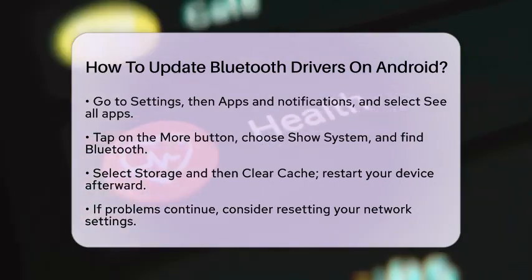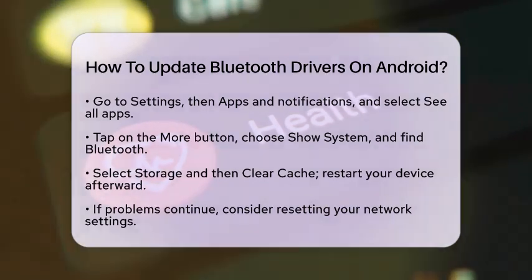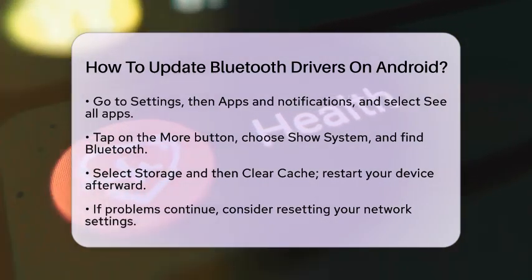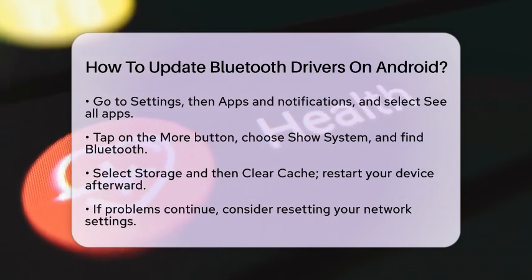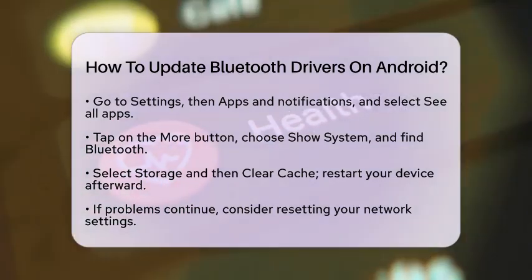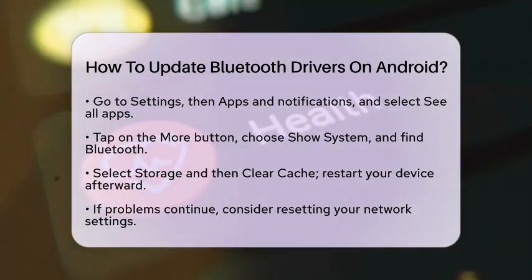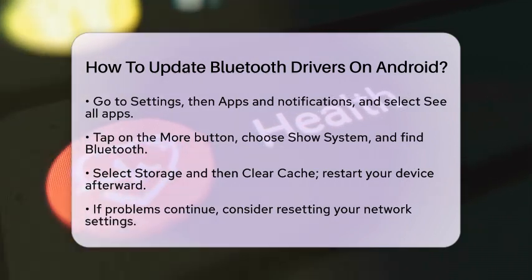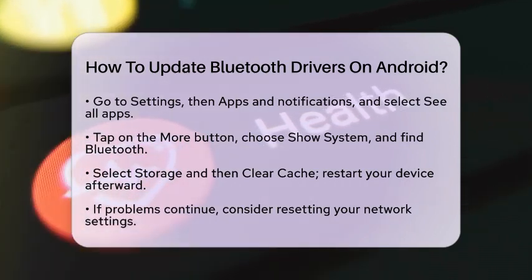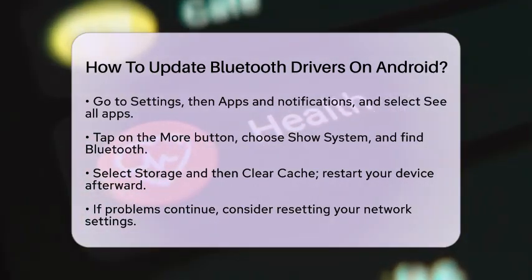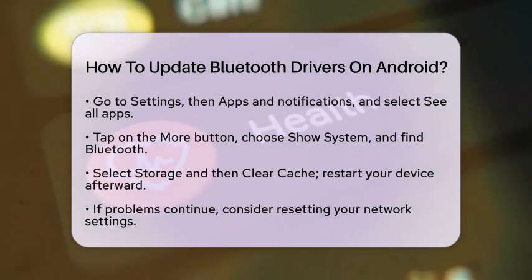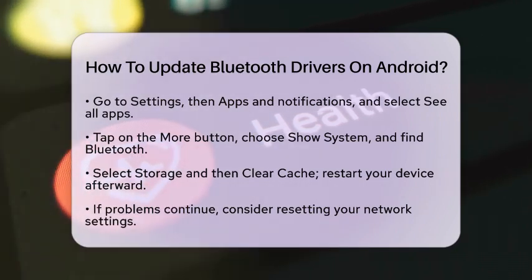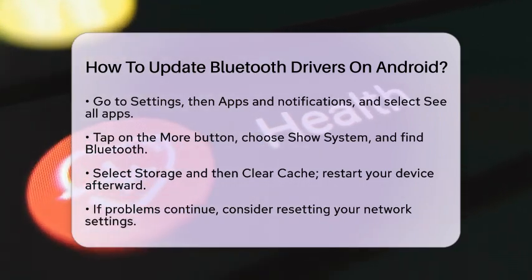If you are still having trouble with Bluetooth, you might want to reset your network settings. This can resolve various connection problems. To reset network settings, go to Settings, then System, and find Reset Options. Tap on Reset Network Settings and confirm the action. This will reset all network-related settings, including Wi-Fi and Bluetooth.